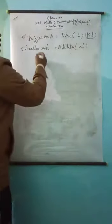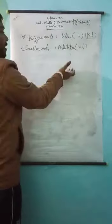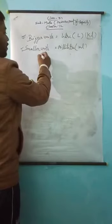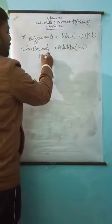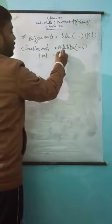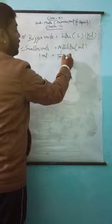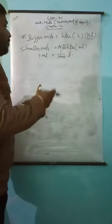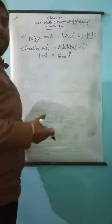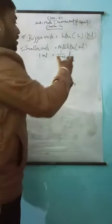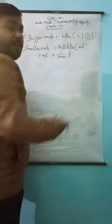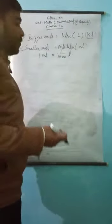For converting a smaller unit to a bigger unit, we write the opposite: one milliliter is equal to one upon one thousand liters. If we have some milliliters and want to convert to liters, we divide by one thousand.